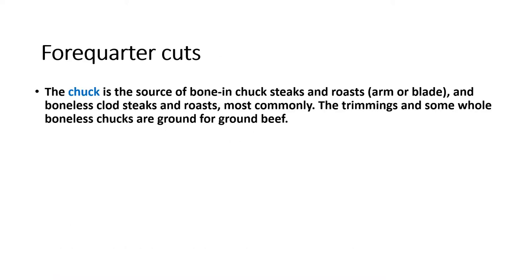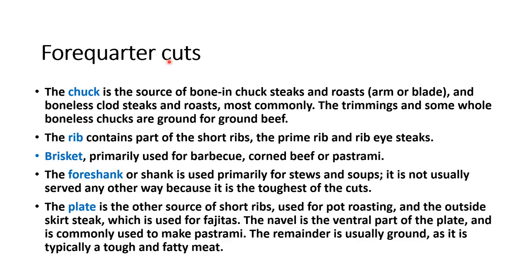Four quarters of rib: the carcass is first split vertically into two, then each part is divided into the front and back. The front part is called the forequarter and comprises the neck, ribs, part of the brisket, and shank. The chuck is one of the main parts of the forequarter cuts. Then you have the rib, brisket, foreshank, and plate.